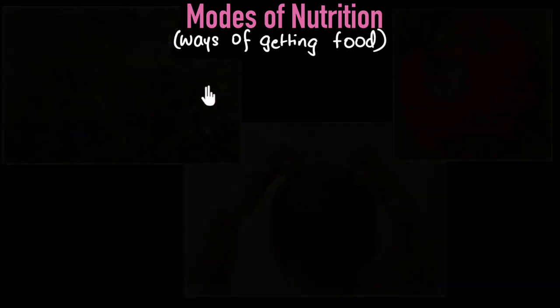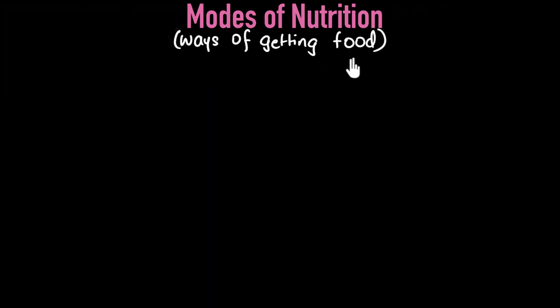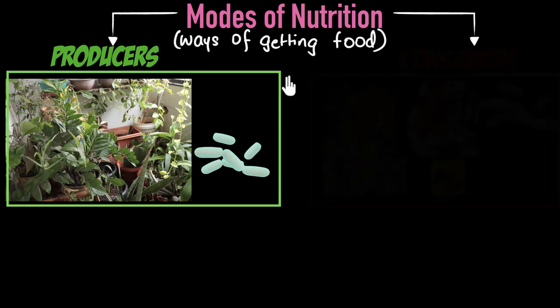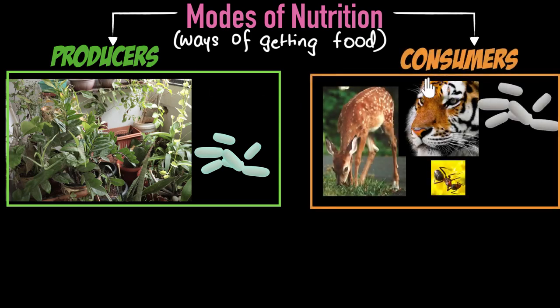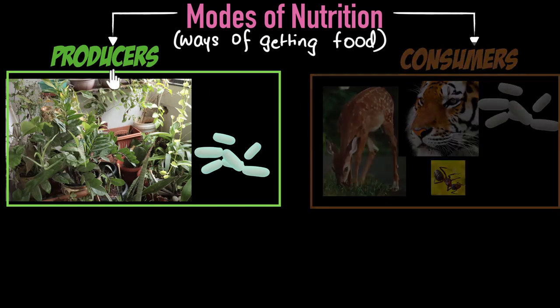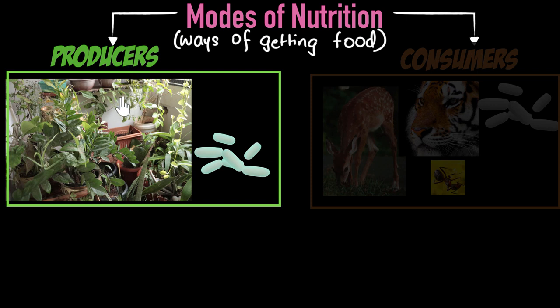Based on how different living things get their food, we can classify them into two categories: producers and consumers. Producers, as the name suggests, are the ones who can produce their own food. Most examples involve the green trees and plants and all the green stuff around you and some bacteria as well.